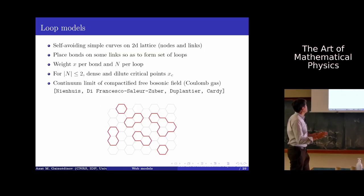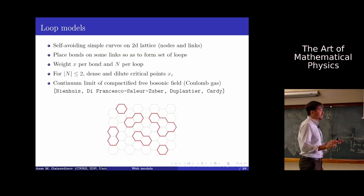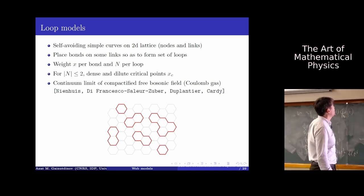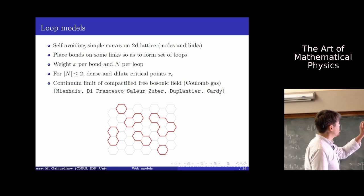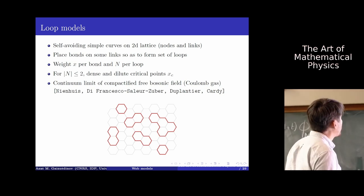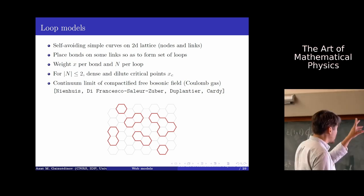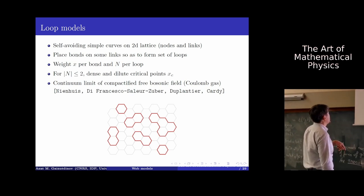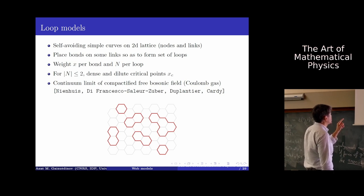Let me first remind you of some basic facts about loop models. This is a statistical model of self-avoiding simple curves on a 2D hexagonal lattice. The lattice is made of nodes and links. To construct a configuration, we place a bond on some links so they form a loop. We put local statistical weights to every bond — say x — and we have a non-local, topological weight n for every loop in the configuration.